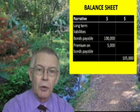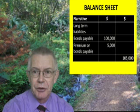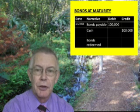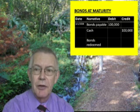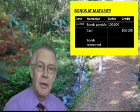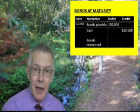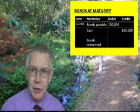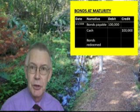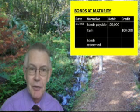There will always be a final entry that is required. This entry will occur when the bonds are redeemed. We say that the bonds have matured when they reach the end of their term of issue. The bonds payable account is debited to reduce the liability, and the cash account is credited, which reduces the asset of cash.